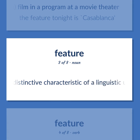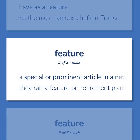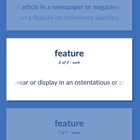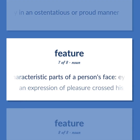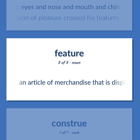Linguistics: a distinctive characteristic of a linguistic unit that serves to distinguish it from other units of the same kind. Have as a feature — this restaurant features the most famous chefs in France. A special or prominent article in a newspaper or magazine — they ran a feature on retirement planning. Wear or display in an ostentatious or proud manner. The characteristic parts of a person's face: eyes, nose, mouth, and chin — an expression of pleasure crossed his features. An article of merchandise that is displayed or advertised more than other articles.